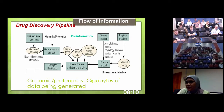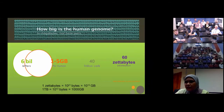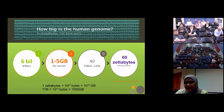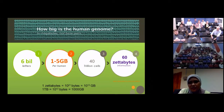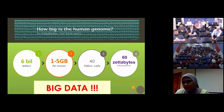To demonstrate the amount of data generated from just one part of the process: in bioinformatics, the human genetic code actually contains 6 billion letters. When you divide that into 8 bytes, you get 1 to 5 gigabytes of data. Each human being has about 40 trillion cells, and this translates into 60 zettabytes of data. This is really huge data being generated from genomics alone, not even talking about clinical trials or structural bioinformatics.